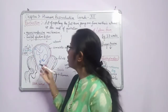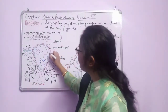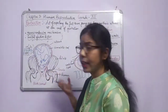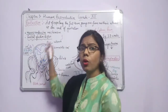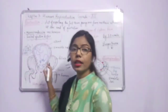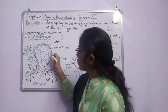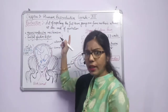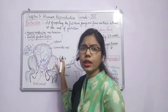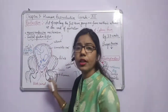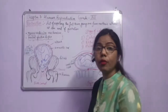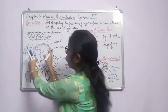Oxytocin receptors are induced everywhere. These receptors send signals to the posterior pituitary gland via the brain and hypothalamus. The posterior pituitary then releases oxytocin hormone, which is important for the contraction of the uterus.